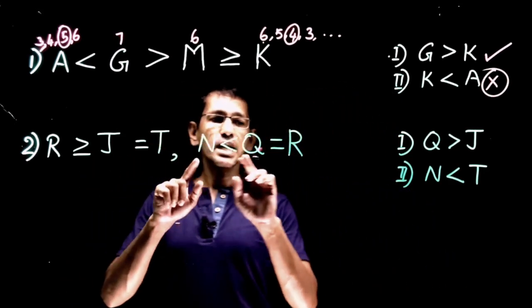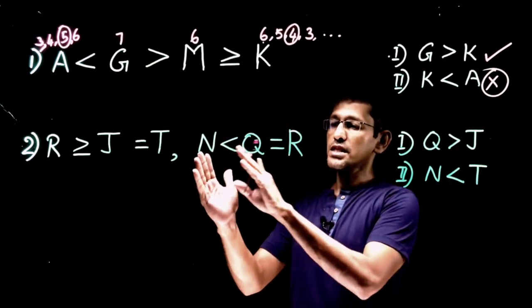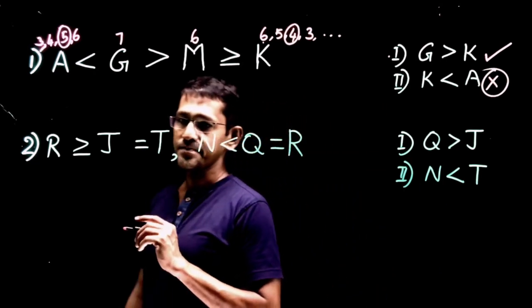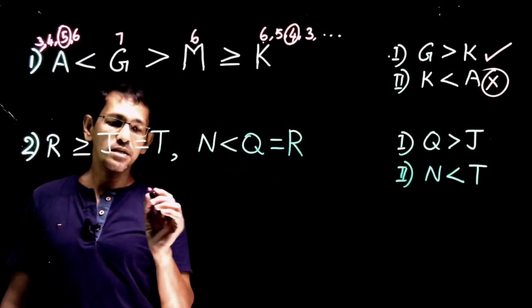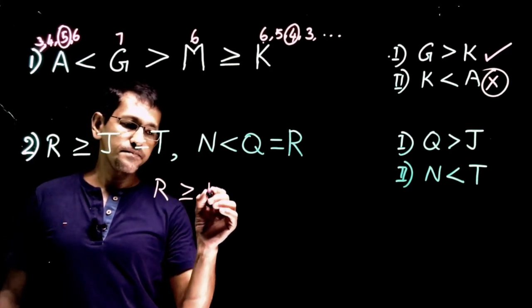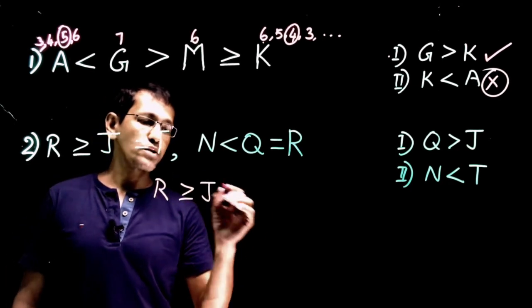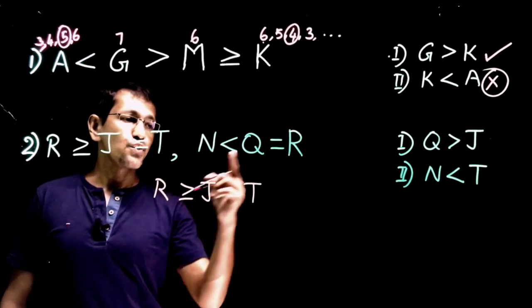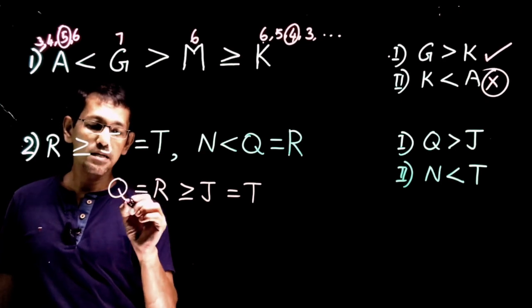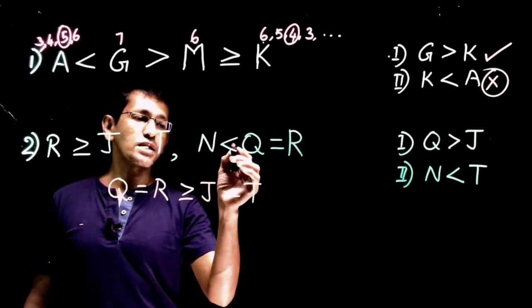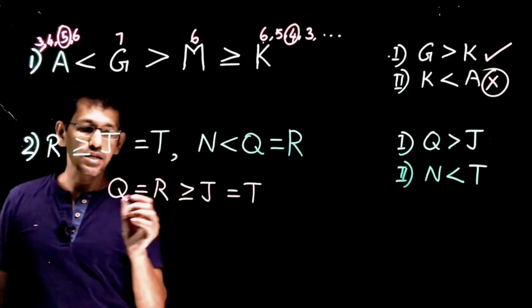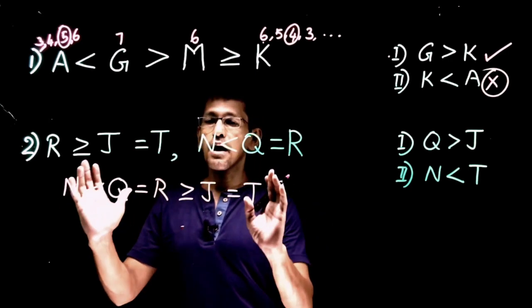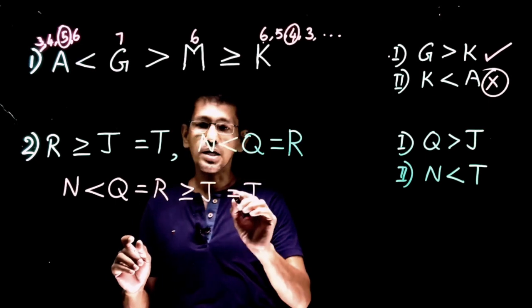The best way to combine is to look for the common letter. In the second statement we have n, q, r, and in the first statement we have r, j, t. The common variable is r. So combining: q equals r, and r is greater than or equal to j, which equals t. And n is less than q. So the full combined chain is: n less than q equals r, r greater than or equal to j, and j equals t.